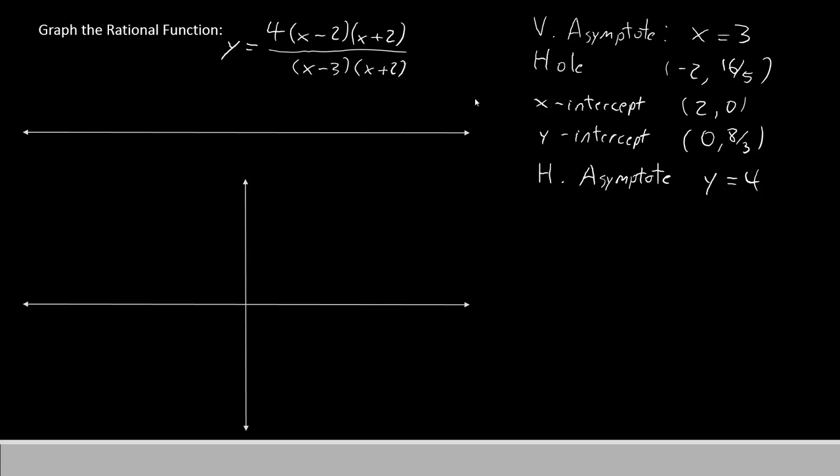So I have the same rational function here that I've been using for the last couple episodes. y equals 4 times (x minus 2) times (x plus 2) divided by (x minus 3) times (x plus 2). On the right side, I've written all of the information that we have collected about this function: the vertical asymptotes, the holes, the x-intercept, the y-intercept, and the horizontal asymptote.